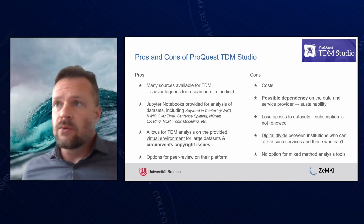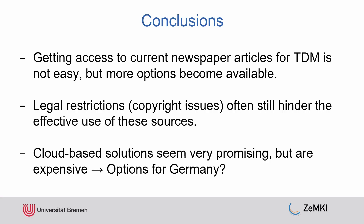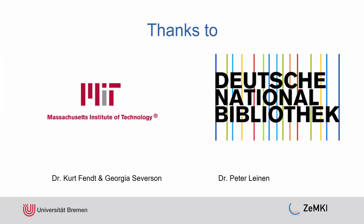To conclude: getting access to newspaper articles for TDM is not easy, but some options are available. Legal restrictions are still hindering effective use, particularly in the case of the German National Library, but surely others as well. Cloud-based solutions seem very promising but are or probably will be expensive - I wonder how this could be done in a state-supported, state-funded way in Germany, which would be excellent. Thanks to the people at MIT and at the German National Library for helping me with this research.